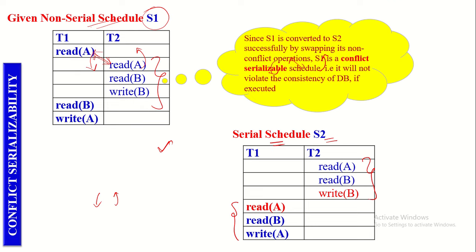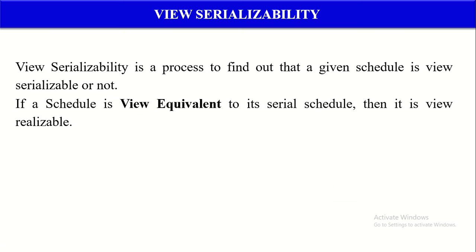Let us now discuss View Serializability with an example. View Serializability is also one type of Serializability technique used to find out whether the given schedule is View Serializable or not. If a schedule is View Equivalent to its Serial Schedule, then it is View Serializable. Let us now check the conditions to determine whether the given schedule is View Equivalent of its Serial Schedule.